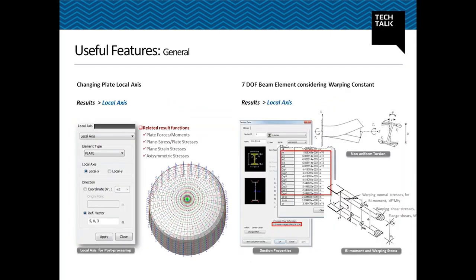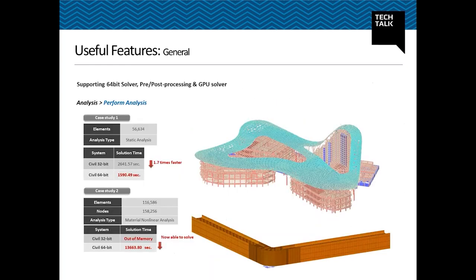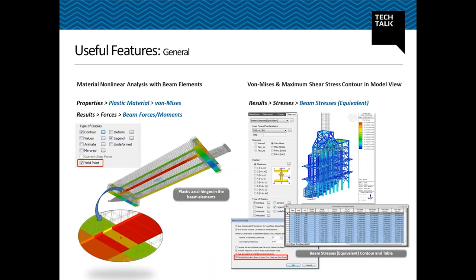Plate local axes can now be aligned with reference to global or cylindrical axes. Seven degrees of freedom of beam elements considering warping constant can be considered, so both St. Venant torsion and warping torsion can be simulated in MIDAS Civil. The analysis speed has been improved by supporting a 64-bit solver. Beam elements are now capable of performing material nonlinear analysis, so both geometric and material nonlinear effects can be taken into account.